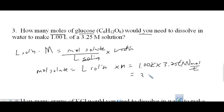So in this case, pretty easy math, 3.25 times 1. That means that many moles of glucose, C6H12O6, would be needed to dissolve to make that. That's how many moles.